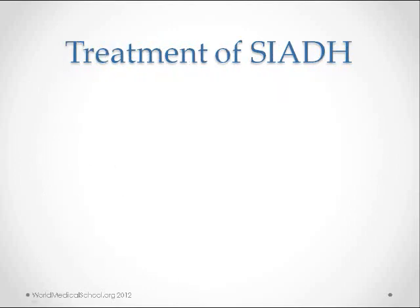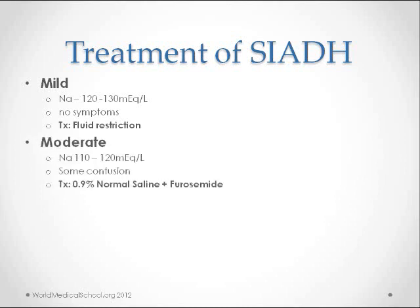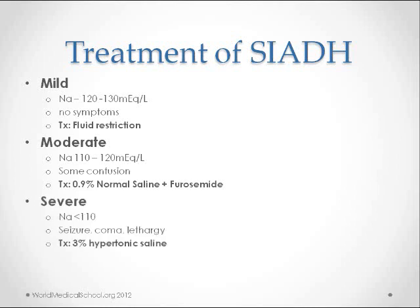Treatment: one has to treat the underlying cause when known and also manage the degree of hyponatremia and its consequences. For mild hyponatremia between 120 to 130 with no symptoms, fluid restriction is the best first step. For moderate hyponatremia between 110 to 120 with mild confusion, normal saline with a loop diuretic like furosemide can be given. For severe hyponatremia less than 110 with severe confusion, seizures, or lethargy, 3% hypertonic saline is the best step.